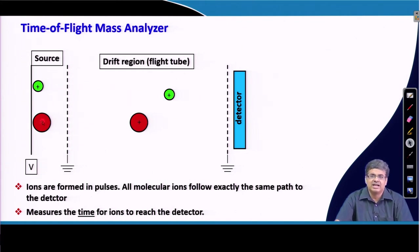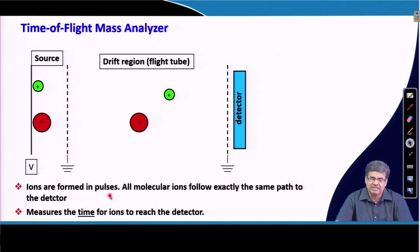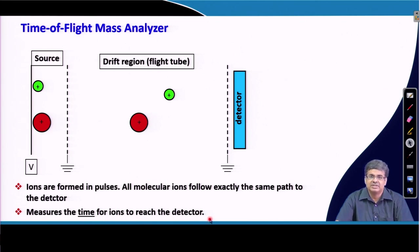Obviously, larger molecular weight ions take more time than smaller molecular ions. Ions are formed in pulses, and all molecular ions follow exactly the same path to the detector. The detector measures the time for the ions to reach it — that is why the term time of flight is used for this technique.